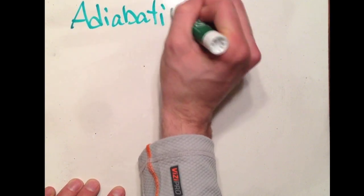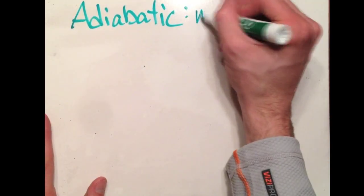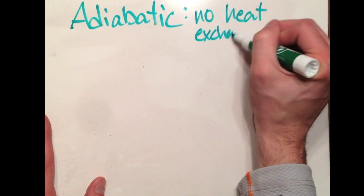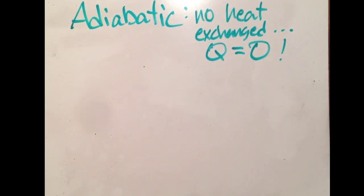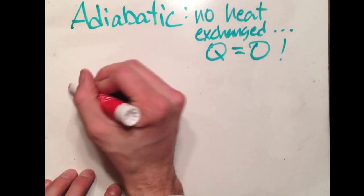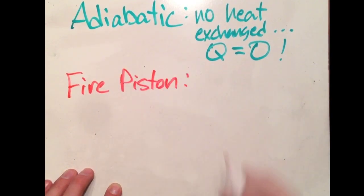The last type of process that we're going to talk about is adiabatic. This is where no heat is exchanged between the system and the surroundings. In other words, Q is zero.